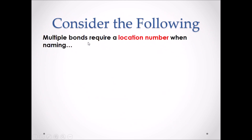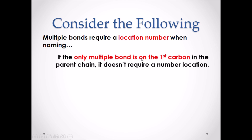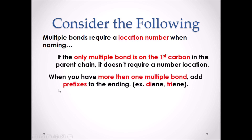Consider the following. Multiple bonds require a location number when naming. If there is only one multiple bond on the first carbon in the parent chain, it does not require a number location — it would be already assumed that that multiple bond is coming off the first carbon. When you have more than one multiple bond, add prefixes to the ending. For example, diene or triene. Diene refers to two multiple bonds. Triene refers to three multiple bonds. An example would be hex-1,3-diene, meaning we have a six-carbon molecule with a double bond coming off the first carbon and the third carbon in the chain.